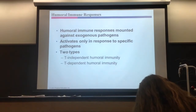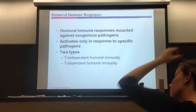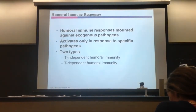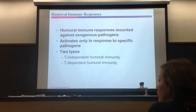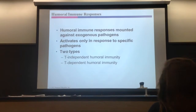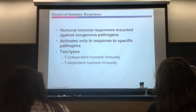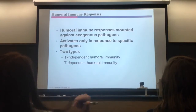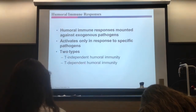Now let's get into humoral immunity. This is B-cells with antibodies. We're attacking exogenous — meaning outside the cell — pathogens, stuff in the blood. You've got two types: T-independent and T-dependent. T-cell-independent humoral immunity is not very good. The best one is T-cell-dependent humoral immunity because with T-cells activated, you can actually make B-cells that are memory cells.